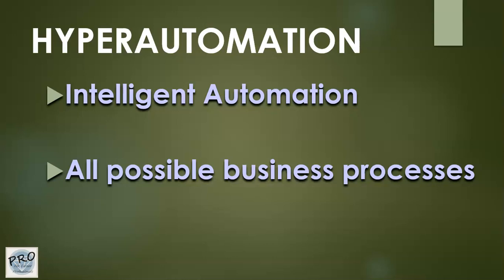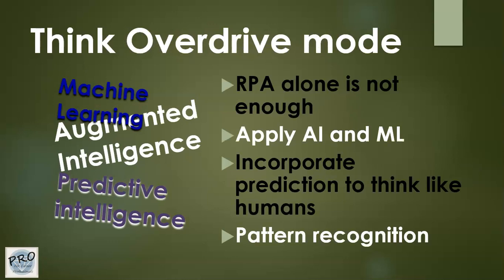You can think of hyper automation as driving a car in overdrive — that's one way to look at it. If you want to incorporate hyper automation, you have to not only think of applying rules, but also incorporate augmented intelligence and machine learning.